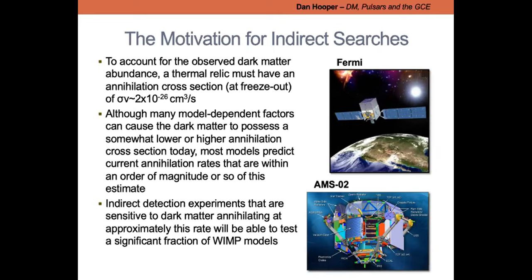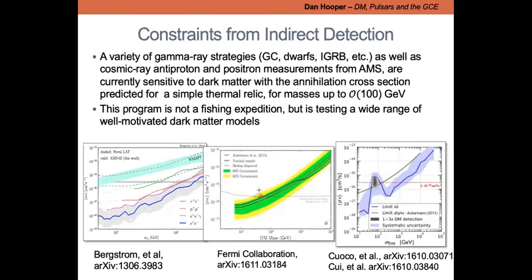When we put gamma-ray telescopes in space or cosmic-ray detectors sensitive to dark matter annihilating at approximately this annihilation cross-section level, we are meaningfully testing the whole paradigm of thermal relic WIMPs, which historically have been the main paradigm for dark matter over the last several decades. A variety of strategies using gamma rays from the galactic center, dwarf galaxies, and the isotropic gamma-ray background, as well as searches using cosmic-ray antiprotons and positrons, are all sensitive to dark matter at this benchmark cross-section, at least up to masses on the order of 100 GeV.